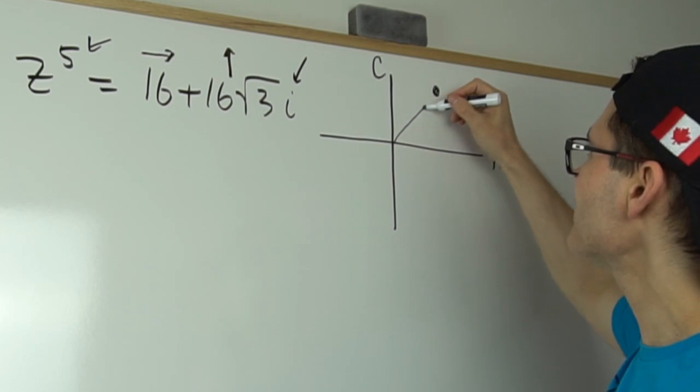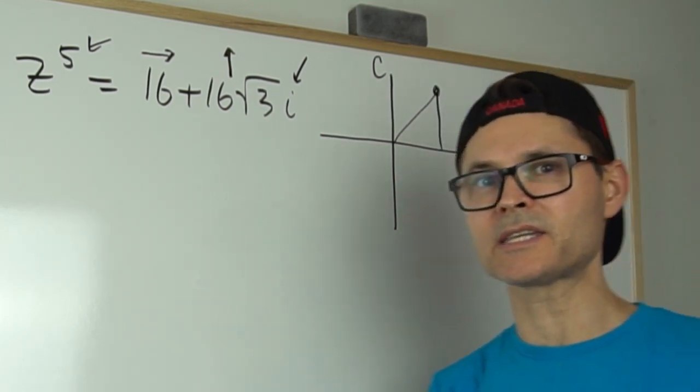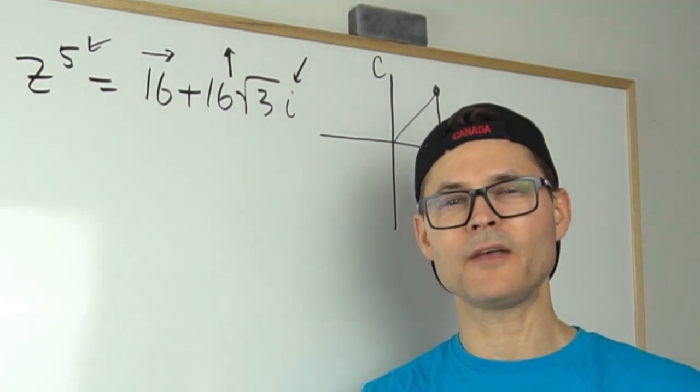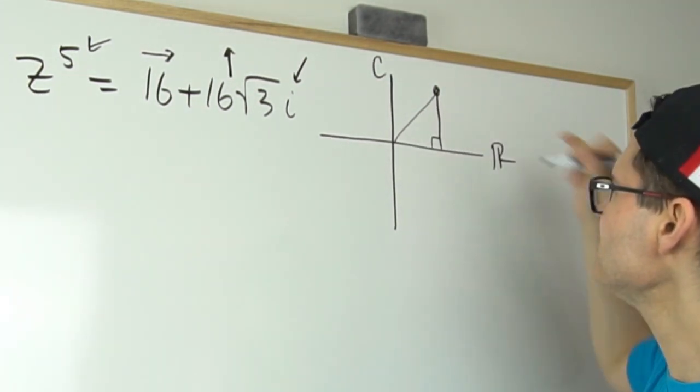So I'm going to connect it up as a triangle referred to the x-axis, because a lot of you would be taught this referring it to the x-axis. And so that creates a 90 degree angle.